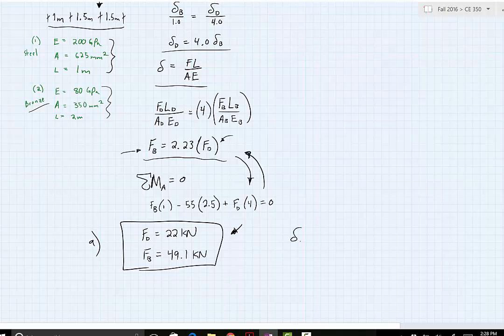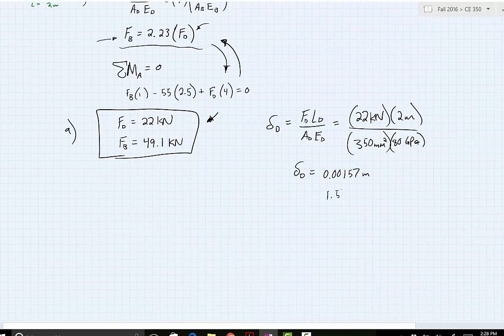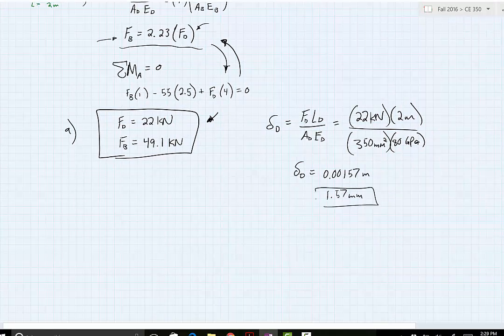So the deflection at D is going to equal the force of D, the length of D multiplied to the area at D, Young's modulus at D, which this then equals force of D is 22 kilonewtons multiplied to 2 meters divided by 350 millimeters squared multiplied to 80 gigapascals. Solving this you should get a deflection at D equaling 0.00157 meters or 1.57 millimeters. So that's the deflection at D.